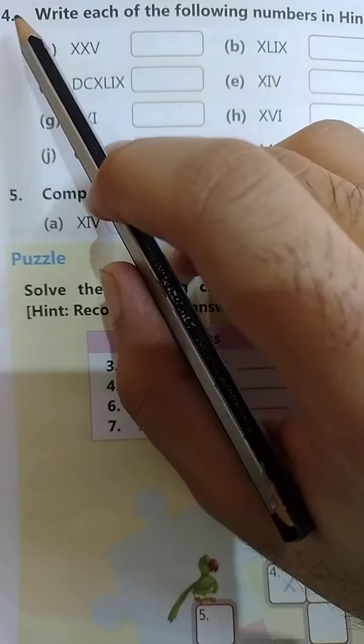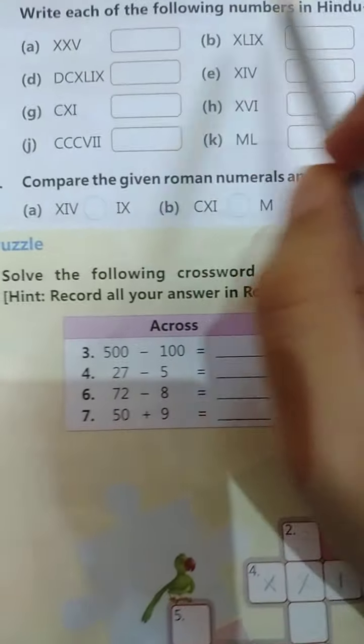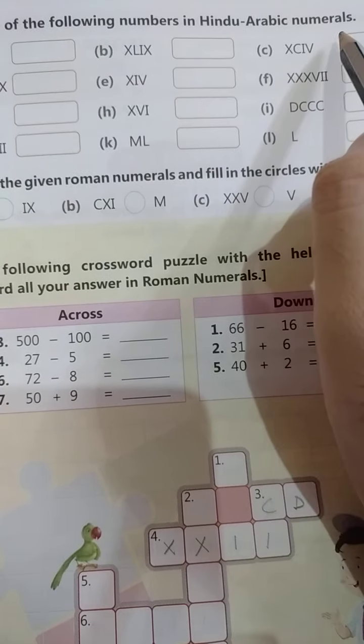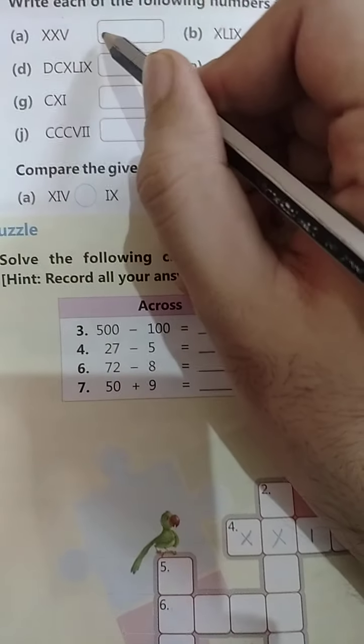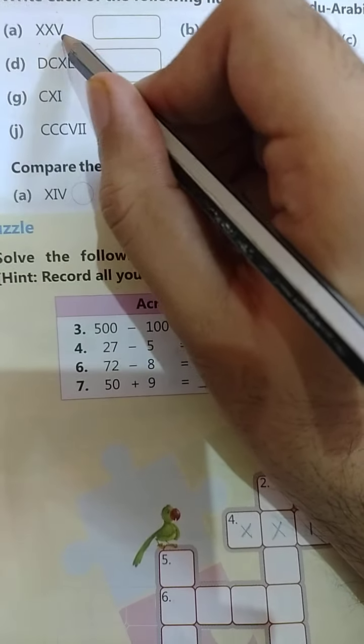So we will start from question number 4. Write each of the following numbers in Hindu-Arabic numerals. Now we will write in Hindu-Arabic numerals. This is 1025.